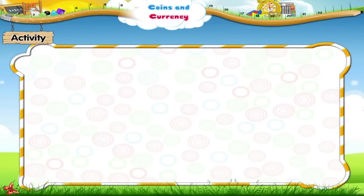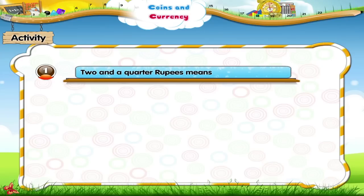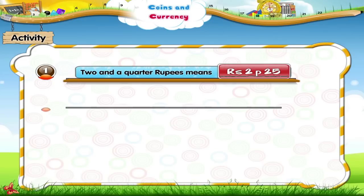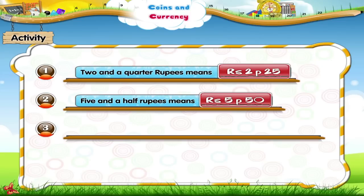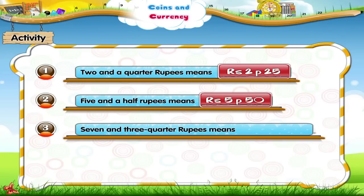And now a different activity. The first one has been worked out. Two and a quarter rupees means two rupees twenty-five paise. Three and a half rupees means three rupees fifty paise. Five and a half rupees means five rupees fifty paise. Seven rupees and seventy-five paise.